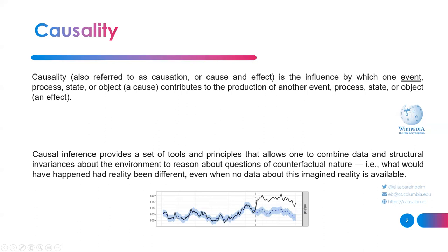For this lecture, I'm not going to talk about the tools used for causal inference in general, but rather the measures of causality. Specifically, if I have two time series, I need to know if X causes Y or Y causes X, and to what extent. So what measures can I use for that specific problem?